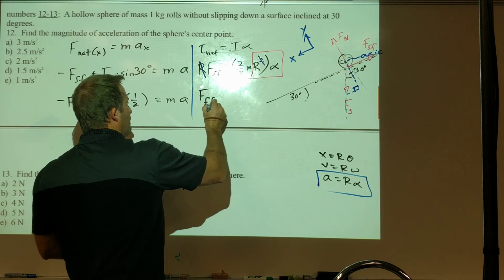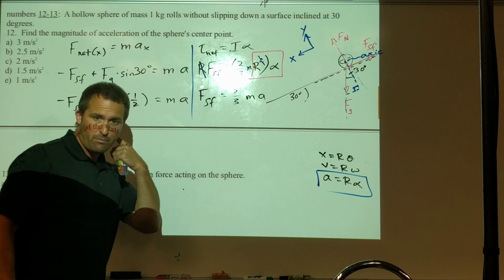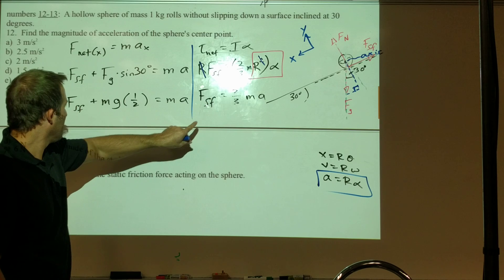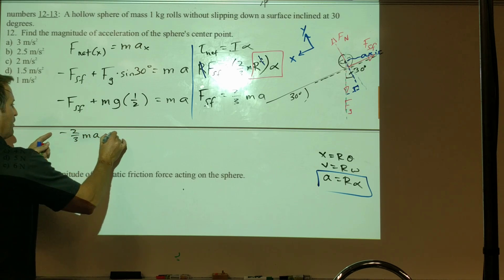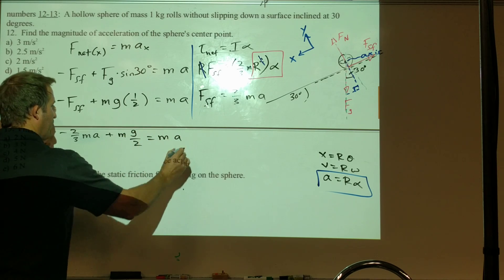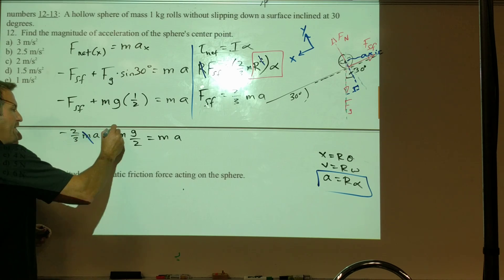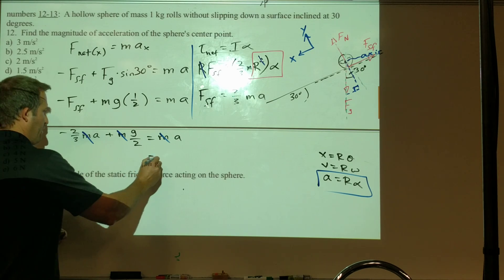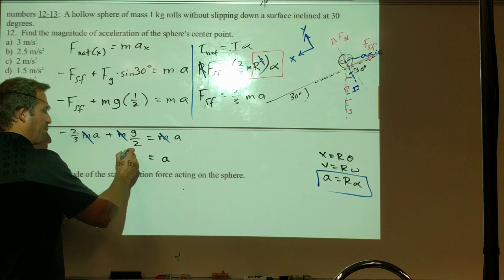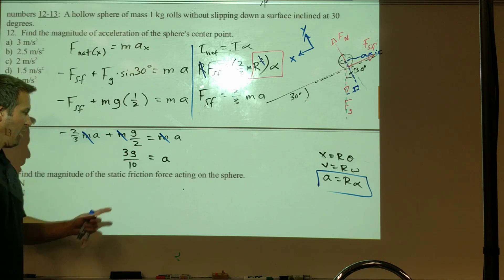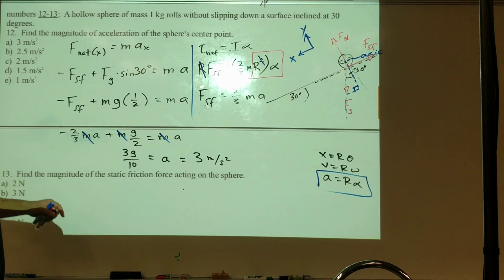I'm ready to take this and plug it in. We can see that there's only one unknown left, and that's a, so we should be able to solve. It also simplifies because we can divide through all the terms by M. Now we should be able to solve for a. I'm going to add two-thirds a to both sides, so I'll have five-thirds a over here. When I solve, I'm going to get 3g over 10. We use g equals 10 meters per second squared on our exams, so we just end up getting 3 meters per second squared. That's answer A.